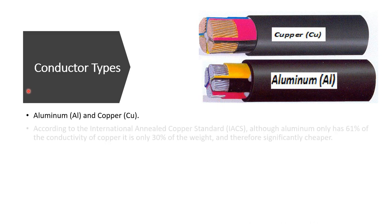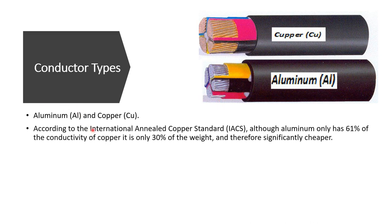According to the international annealed copper standard, aluminum only has 61% of the conductivity of copper. This means that copper has higher conductivity than aluminum. That is the first advantage of copper: for the same cross-sectional area, copper can carry more current than aluminum.